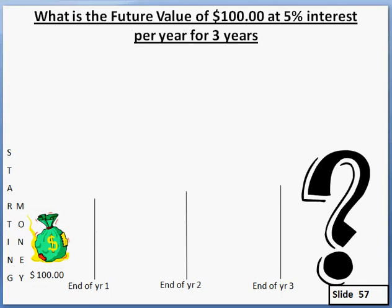That formula is called Future Value. Future Value means we're looking at how much money will we have at some future time if we deposit a given amount of money at a given interest rate for a certain number of periods or years. The formula is: Future Value (FV) equals P times the quantity (1 plus R) raised to the T power.